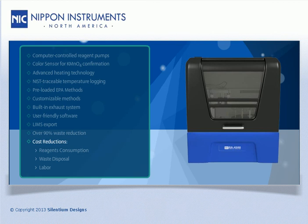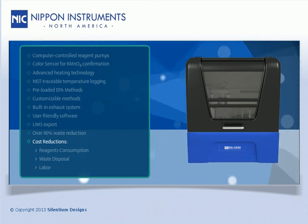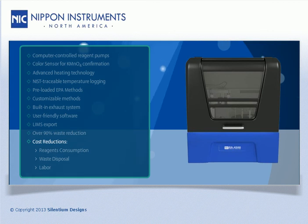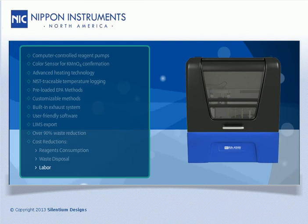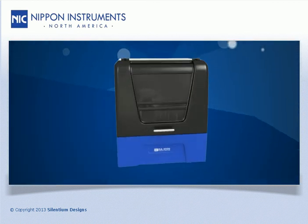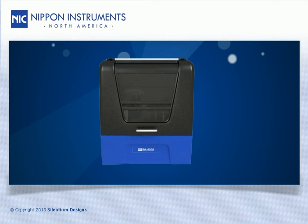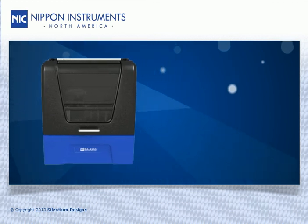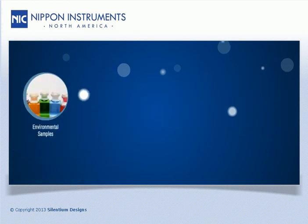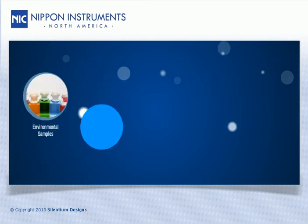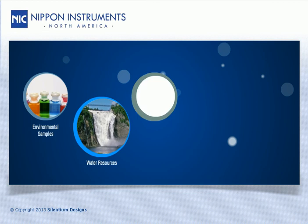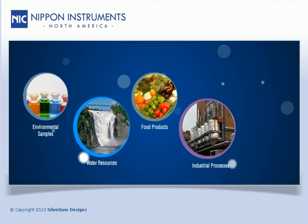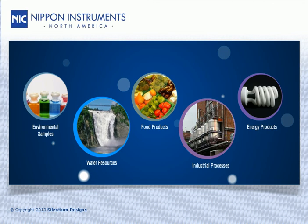With an unprecedented level of automation, the RA4500 has the ability to provide considerable cost savings to laboratories by reducing reagents, wastes, and labor costs. The RA4500 provides accurate, precise, and quick mercury measurements in samples from various fields such as environmental samples, water resources, food products, industrial processes, and energy products.